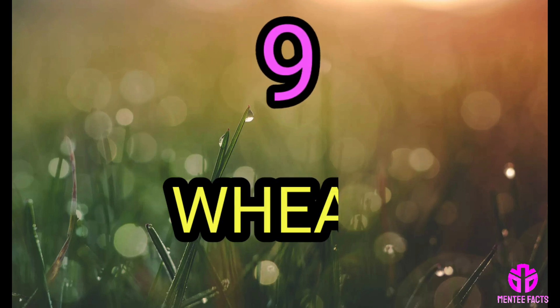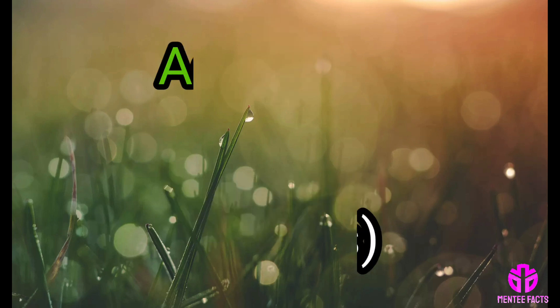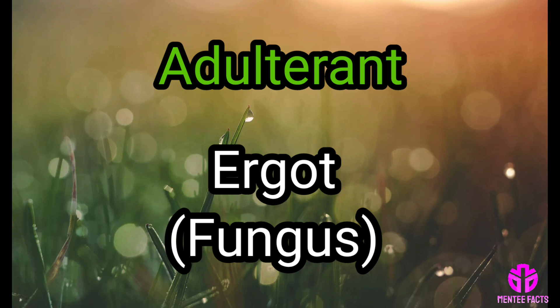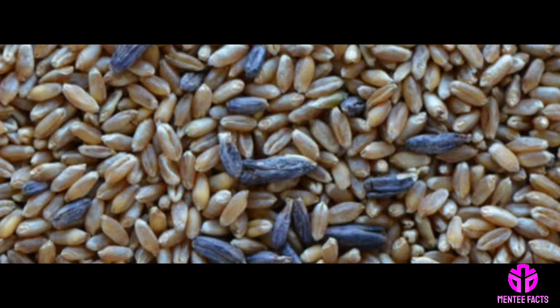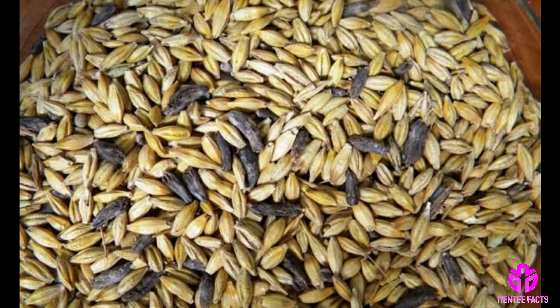Detection of food adulterant in wheat: the adulterant is ergot, a fungus. Wheat is very commonly adulterated with ergot, a fungus containing poisonous substances that is extremely injurious to health.